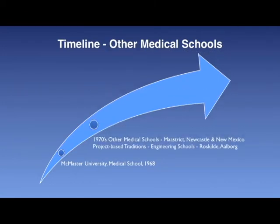Soon after, three other medical schools adopted the McMaster model: the University of Limburg at Maastricht in the Netherlands in 1972, the University of Newcastle in Australia in 1976, and the University of New Mexico in the United States in 1979. They developed their own spheres of influence in addition to the Mecca at McMaster. From these four institutions sprang one of the most important educational movements of this century, taken from mededonline.org.